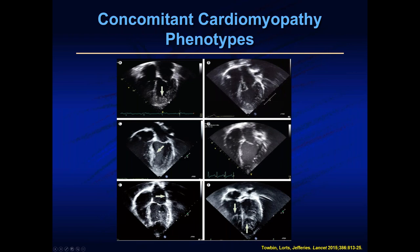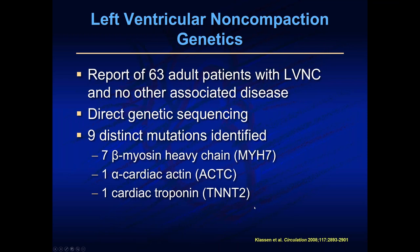This slide shows concomitant phenotypes: isolated LVNC with normal size and squeeze but visible trabeculations; LVNC where the ventricle is dilated and not squeezing well; LVNC where the heart muscle is thickened; a combination of dilation and thickening; restrictive cardiomyopathy where the atria are very enlarged alongside trabeculations; and lastly biventricular non-compaction, where non-compaction is present on both the left and right sides of the heart.